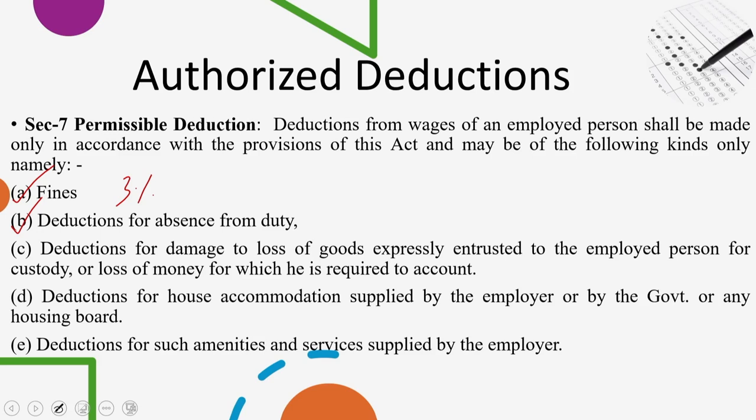Regarding deductions for absence from duty, subject to any rules made by the state government, if 10 or more employed persons acting in concert absent themselves without due notice — that is, without giving the notice required under the terms of the contract of employment and without reasonable cause — such deduction from any such person may include an amount not exceeding his wages for 8 days as may by such terms be due to the employer in lieu of the due notice.